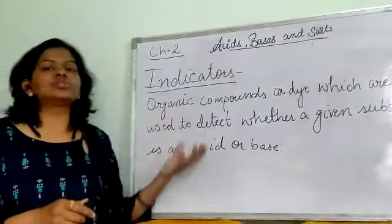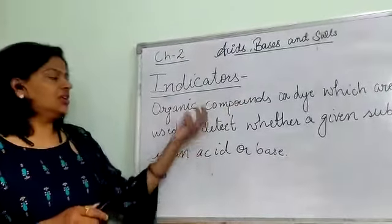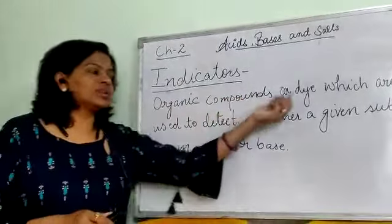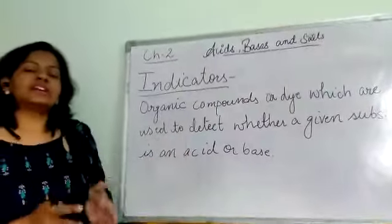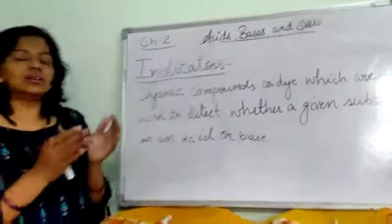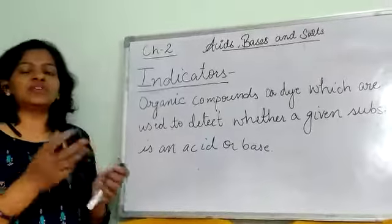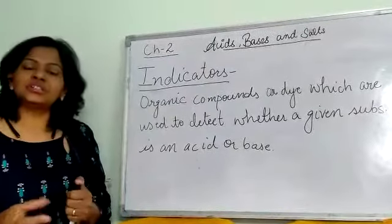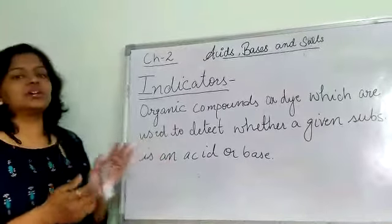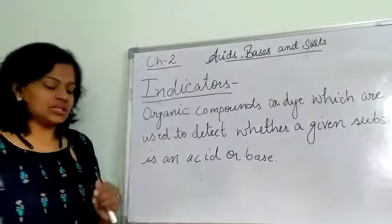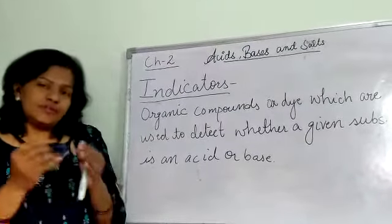Indicators are basically organic compounds — organic in nature — or you can say dyes of different colors, which detect the presence of acid or base. If any unknown substance is given to you, indicators can be used to determine whether it is an acid or a base.